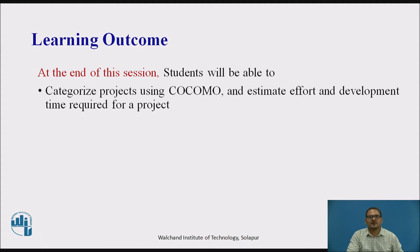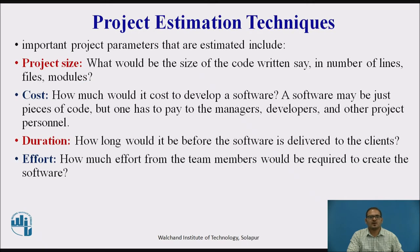At the end of this session, students will categorize projects using the COCOMO model and estimate the effort and development time required. A software project is not just about writing a few hundred lines of source code. The scope can be quite large and could take several years to complete. Key parameters include project size in lines of code, files, or modules, and cost — covering pay for managers, developers, and other project personnel.